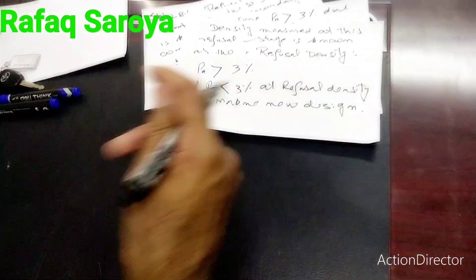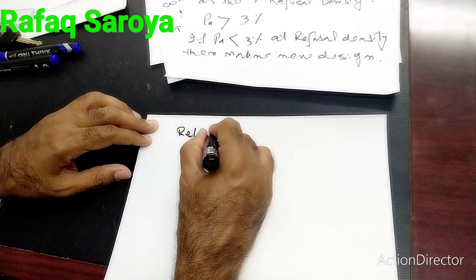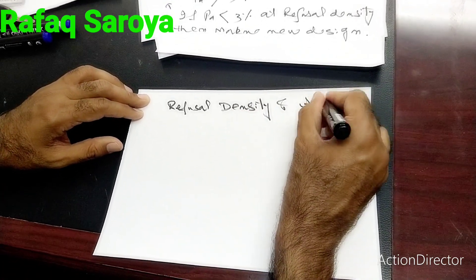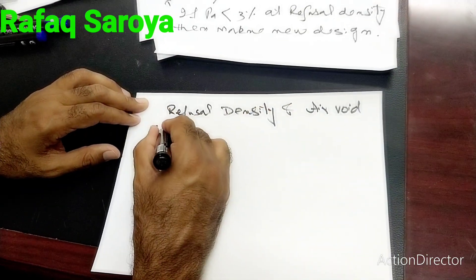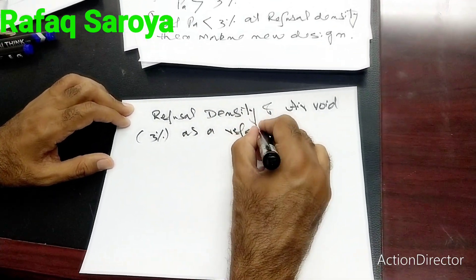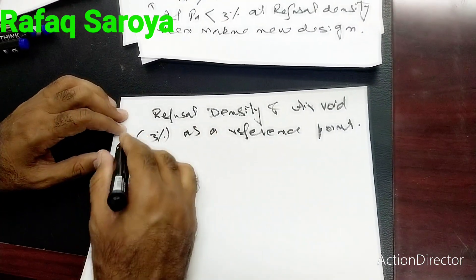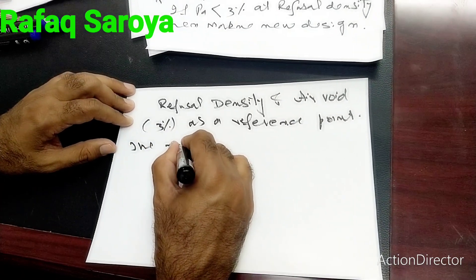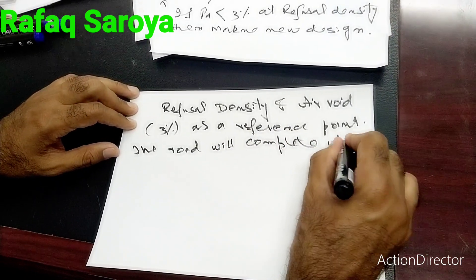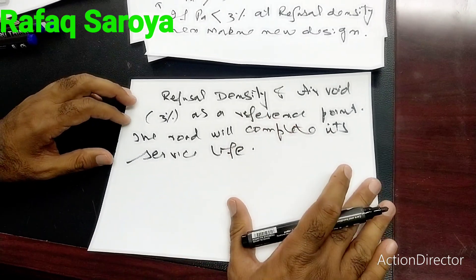We are measuring this refusal density and checking that air voids remain at or above 3%. This is a reference point: if this condition is satisfied, the road will complete its service life, which may be 10 years or 15 years.